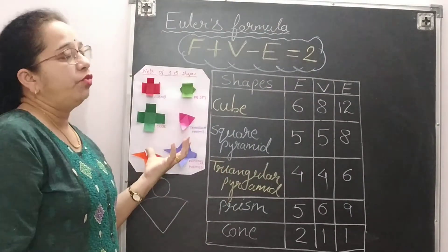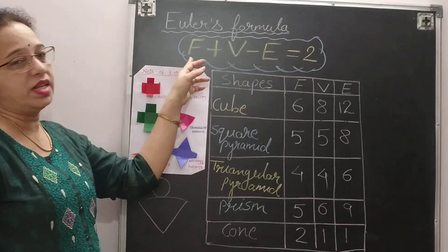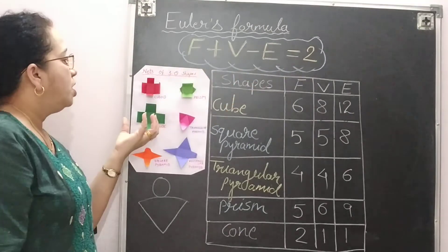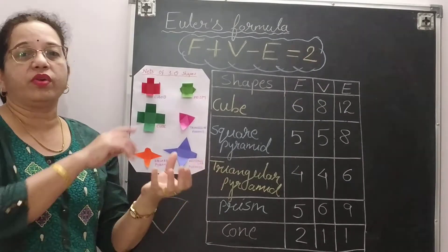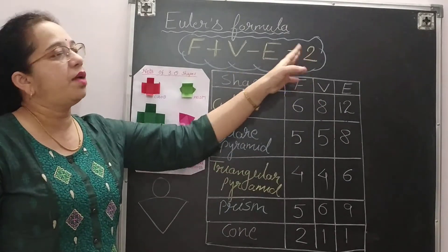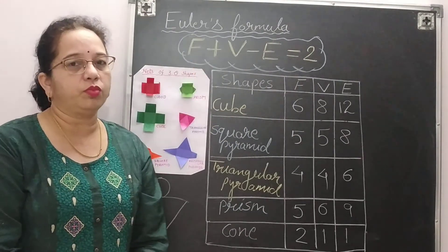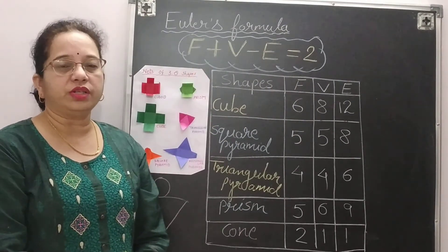So this is the way with this paper folding activity you can count the number of faces, vertices, edges. You can keep this in your hand. You can count this. You can make the table and substitute the values. Every time you will get 2. So this is called Euler's formula. Thank you for watching today's video. Thank you.